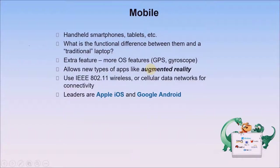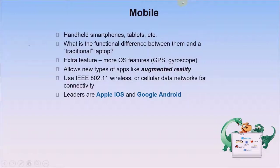On mobile, we have handheld smartphones and tablets. The functional difference from a traditional laptop is the freedom of mobility with a smaller size. Extra OS features include GPS and gyroscope, which allow new types of apps like augmented reality. Mobile devices use wireless cellular data networks for connectivity. Leaders in mobile include Apple and Android.